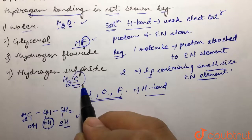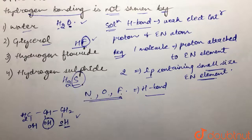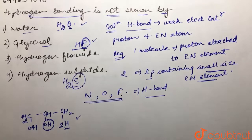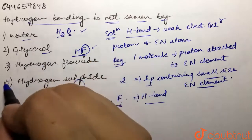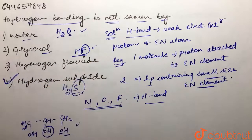The fourth option is hydrogen sulfide, H₂S. Sulfur is not a highly electronegative element capable of forming hydrogen bonds, and moreover it is large in size. Hence, H₂S does not show hydrogen bonding. So our answer is the fourth option — hydrogen sulfide.